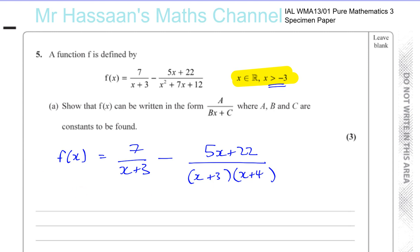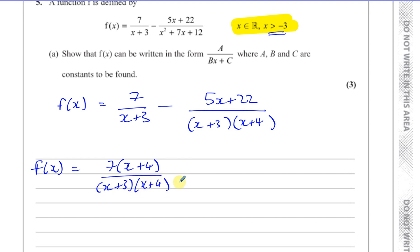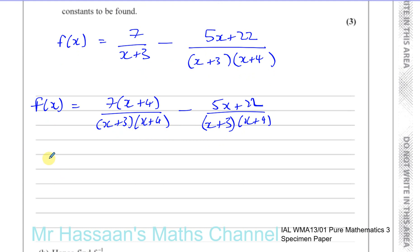To combine the fractions, we make both denominators the same by multiplying the first fraction's numerator and denominator by x plus 4. This gives us 7 times x plus 4 over x plus 3 times x plus 4, minus 5x plus 22 over x plus 3 times x plus 4. Now we have the same denominator and can subtract the numerators under one common denominator.